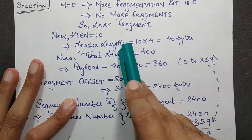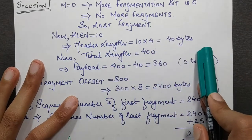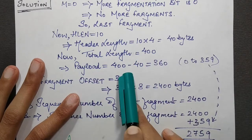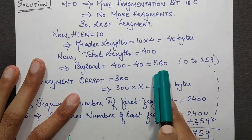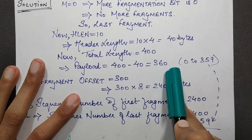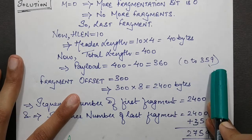Now, if HLen is 10, that means the total header length is 10 × 4 = 40 bytes. Total Length was 400, so the Payload becomes 400 - 40 = 360 bytes. The payload length is 360, so it is numbered from 0 to 359.